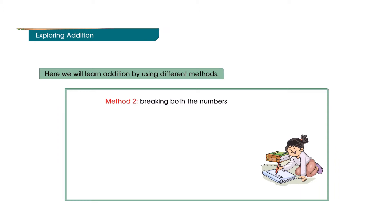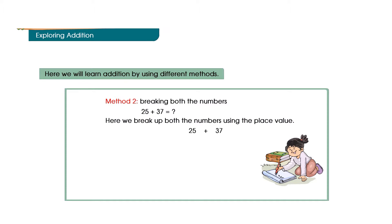Method 2: Breaking both the numbers. 25 plus 37 is equal to how much? Here we break up both the numbers using the place value. 25 plus 37 becomes 20 plus 5 plus 30 plus 7. 20 plus 30 is equal to 50. 5 plus 7 is equal to 12. 50 plus 12 is equal to 62.